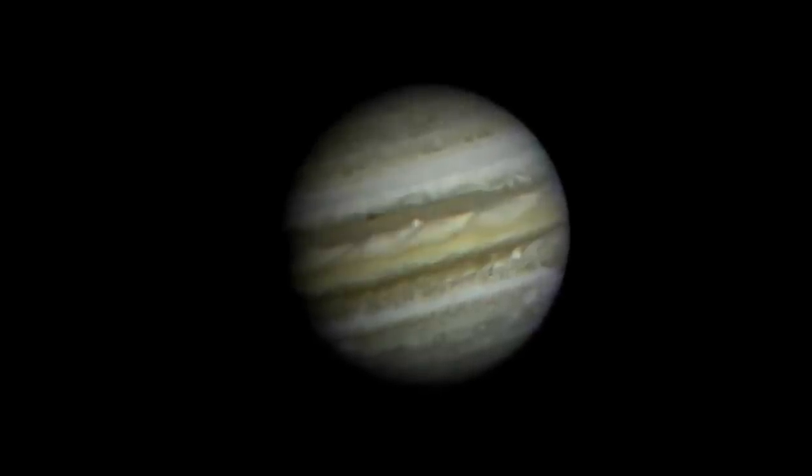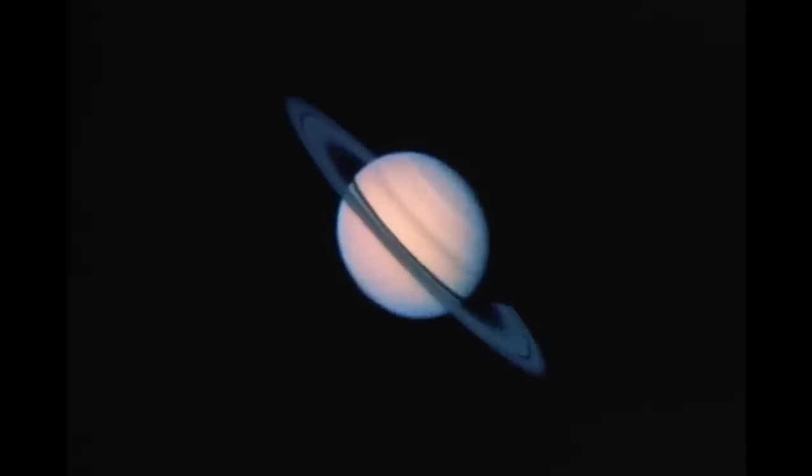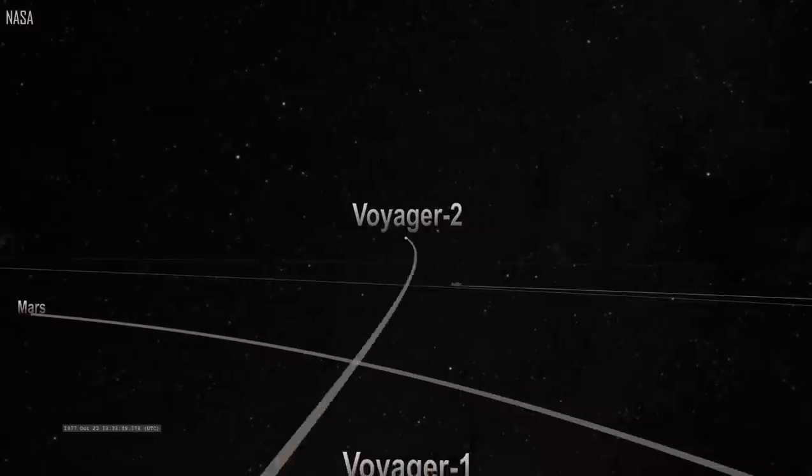They were initially designed to exist for only around five years in order to visit Jupiter and Saturn. Nonetheless, the equipment continued to function, so NASA added flybys of Uranus and Neptune. The tenacious spacecraft kept on and faithfully reported back to Earth.